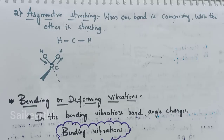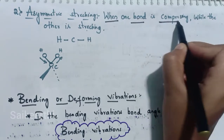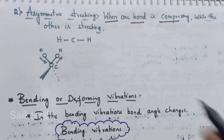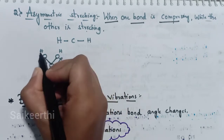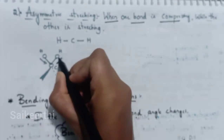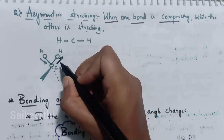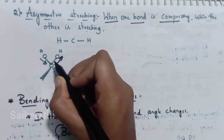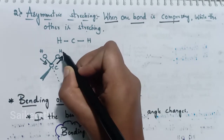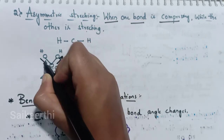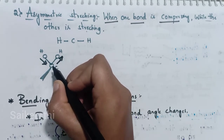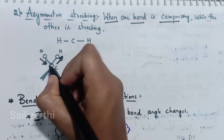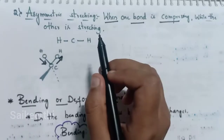Now let's study asymmetrical stretching. In asymmetrical stretching, one bond is compressing while the other is stretching. Consider the CH2 group: one hydrogen bond is elongating (stretching) while the other is compressing. You can observe the asymmetry — one bond moves away from the central atom while the other moves towards the central atom.